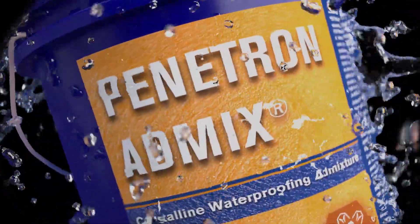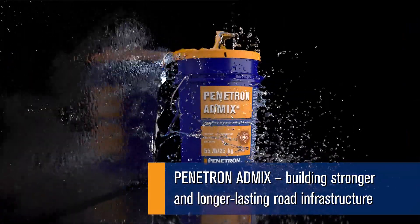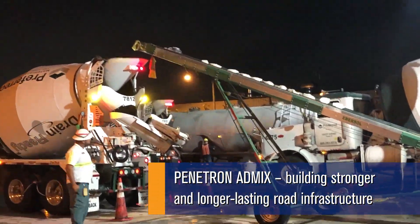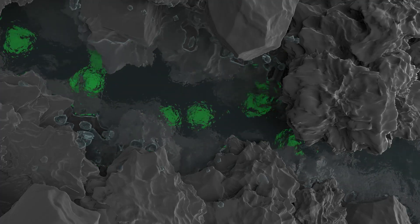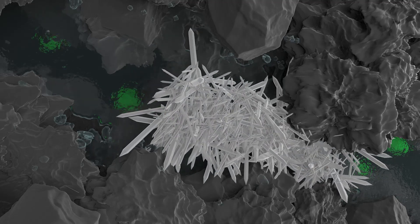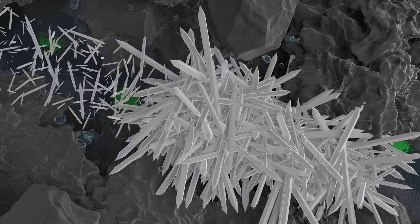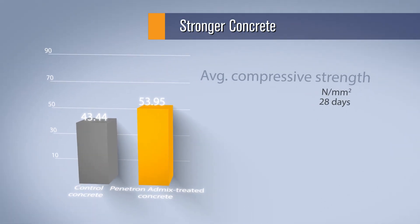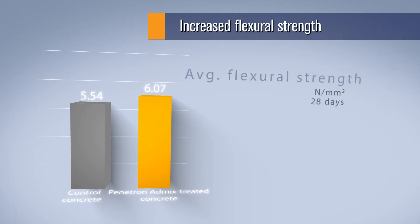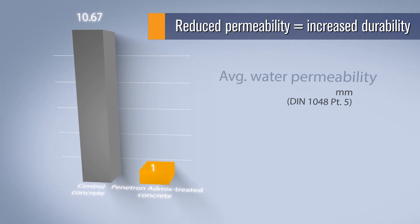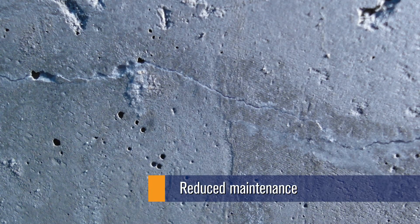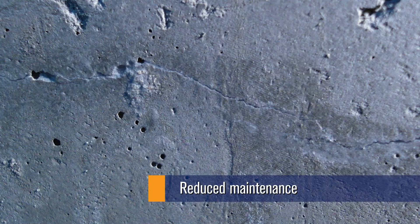Penetron AdMix is the world's first tested and proven durability admixture for road concrete. When added at the time of batching, Penetron AdMix effectively reduces the permeability of concrete by sealing micro cracks, pores and capillaries with insoluble crystals. Adding a durability admixture to road concrete directly addresses the main deterioration issues of conventional road surfaces. Road concrete with Penetron AdMix displays higher compressive strengths than conventional concrete, further reducing the risk of crack development. Pavement quality concretes containing Penetron AdMix have shown significantly reduced permeability of up to 97.6% when compared to untreated concrete. Penetron AdMix also enables road concrete to self-heal micro cracks autonomously, significantly reducing maintenance costs.